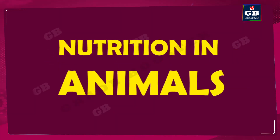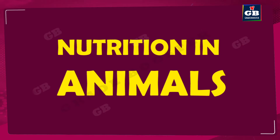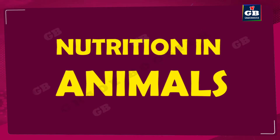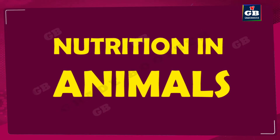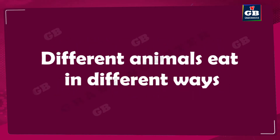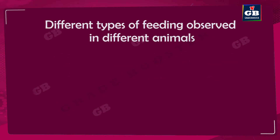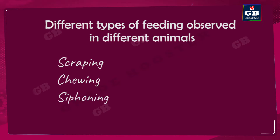Nutrition in animals. In this video we will see the different types of intake of food in different animals. Different animals take food in different ways. Here we have a list showing the different types of feeding observed in different animals: scraping, chewing, siphoning, capturing, swallowing, sponging, and sucking.